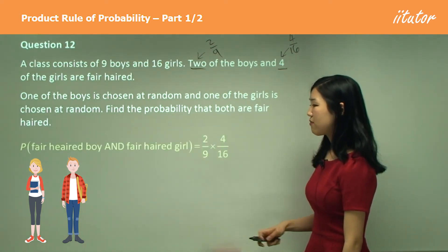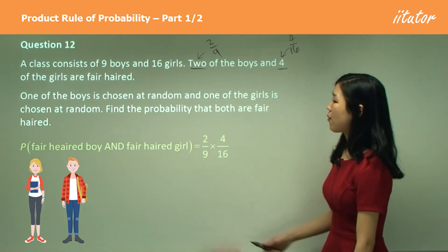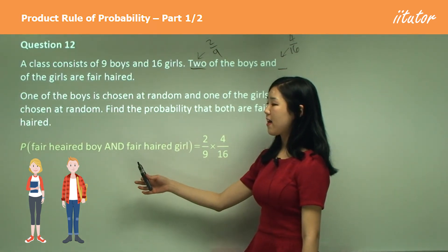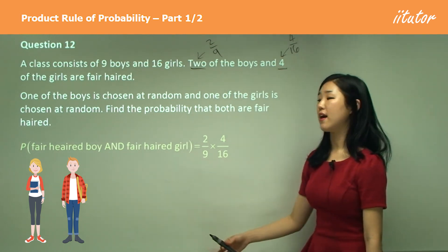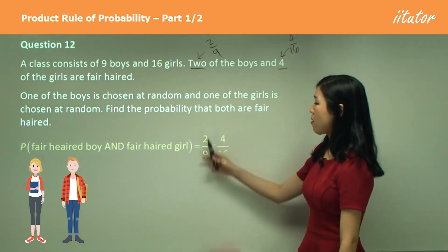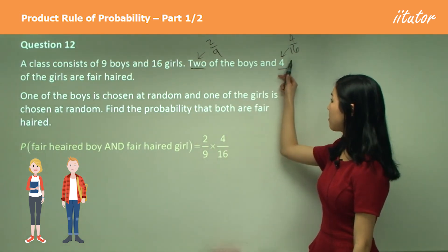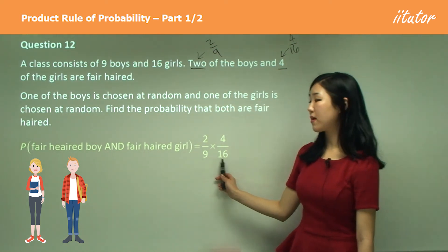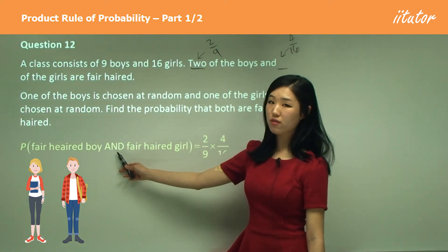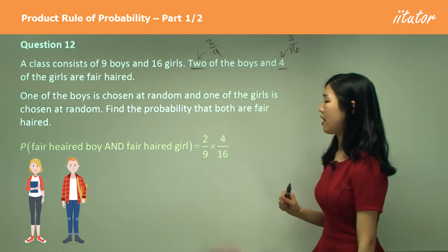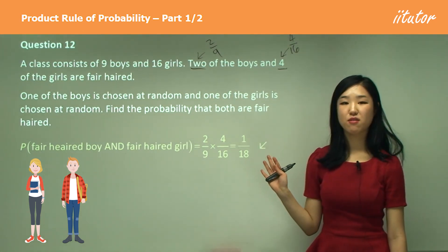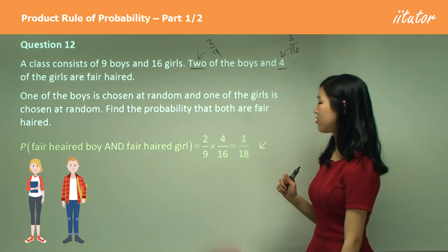So if I want to find the probability of both being fair-haired, I want to find the probability that the boy is fair-haired and the girl is fair-haired. That's the probability of boy being fair-haired, that's the probability of girl being fair-haired. And because it's and, it's not or, it's and. So we multiply and we just get one over 18. Just calculate by yourself and check.